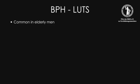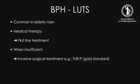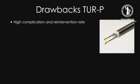BPH-associated lower urinary tract symptoms are common in elderly men. Medical therapy is usually the first-line treatment. When medical therapy fails, more invasive surgical treatments have to be taken into consideration. TURP still represents the surgical gold standard in the treatment of benign prostatic obstruction; however, it is associated with a substantial complication and re-intervention rate and is usually limited to prostate sizes below 80 ml.